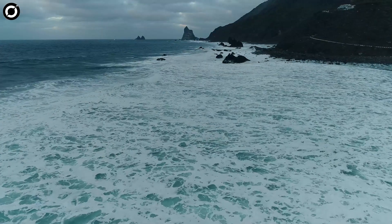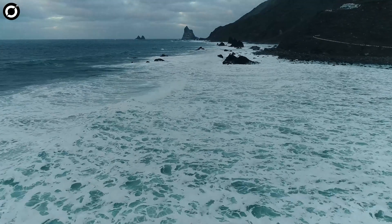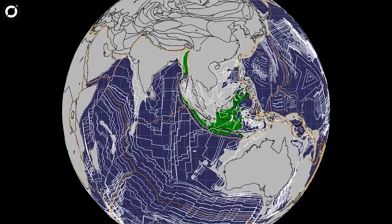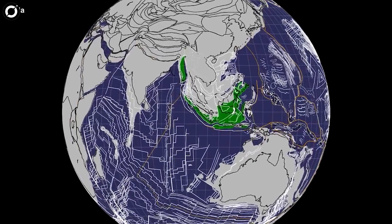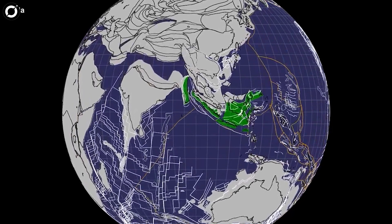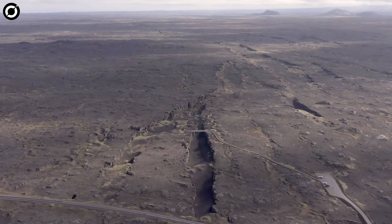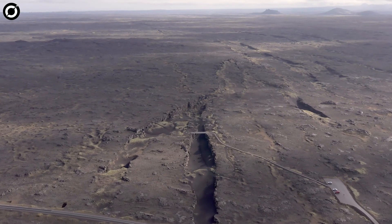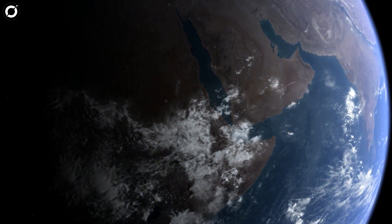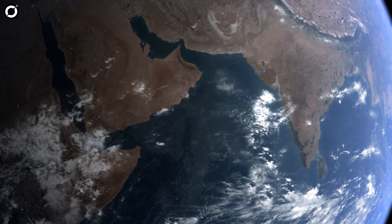They unearthed remnants of ancient oceans dating back some 200 million years. These seas bore witness to the relentless stretching and tearing of Argoland, a process that eventually led to its 3,100-mile drift towards Southeast Asia.